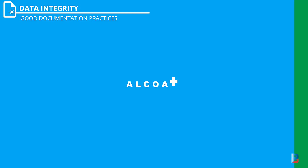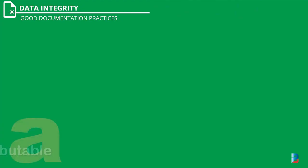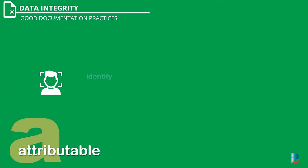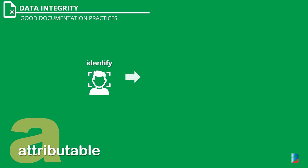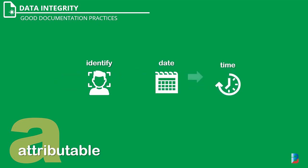Attributable: identification of the work or activity performed by the person should be revealed with date and time from available documents. This should clearly demonstrate the link to its sources — who observed and recorded the information, and when the data was observed and recorded.